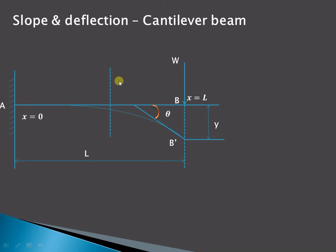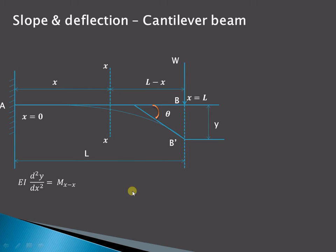Now let us consider a section XX at a distance x from the fixed end. If this distance is x and the total span length is L, then the remaining distance to the free end will be equal to L minus x. We will take the moment about this section XX. The equation for bending moment is the second order differential equation: EI d²y/dx² equals the moment at section XX.